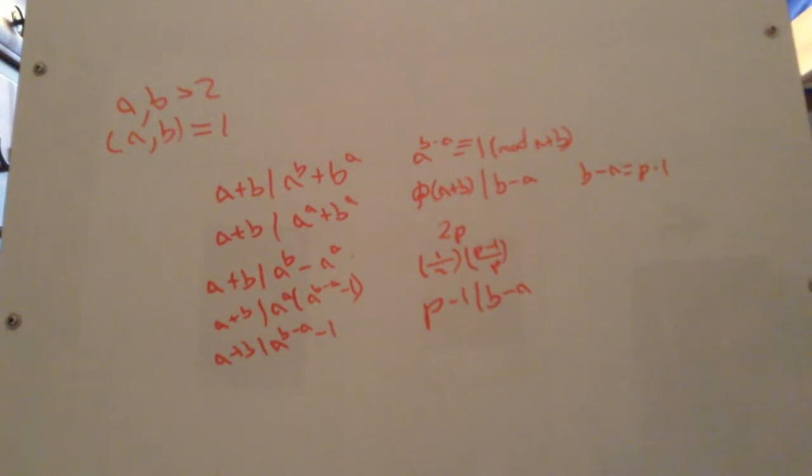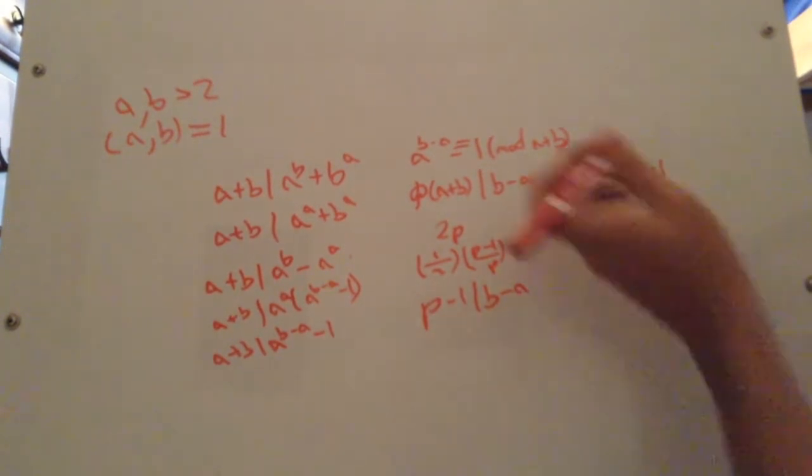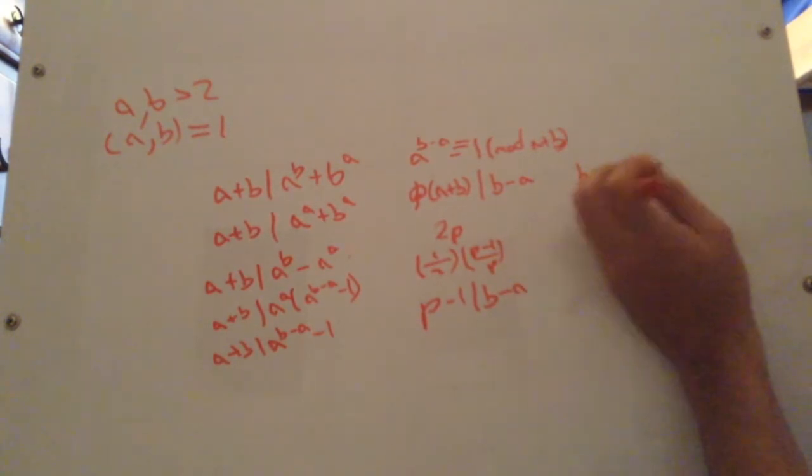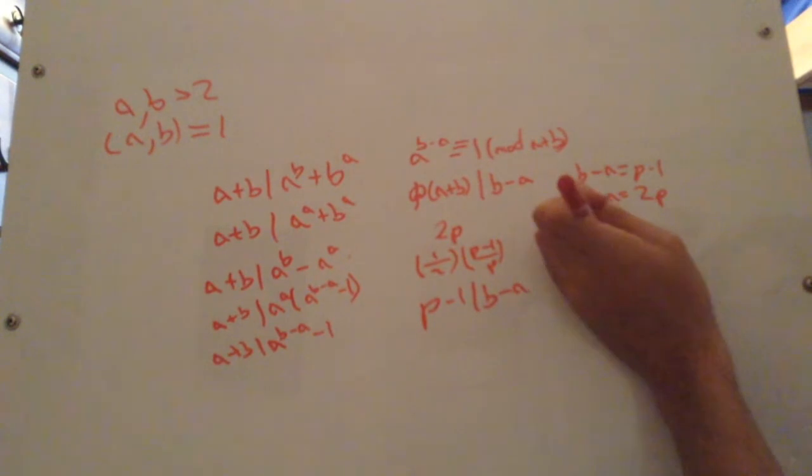That's certainly nice and simple. So then we have b minus a equals p minus 1, b plus a equals 2p. So 2b equals 3p minus 1, and 2a equals p plus 1.